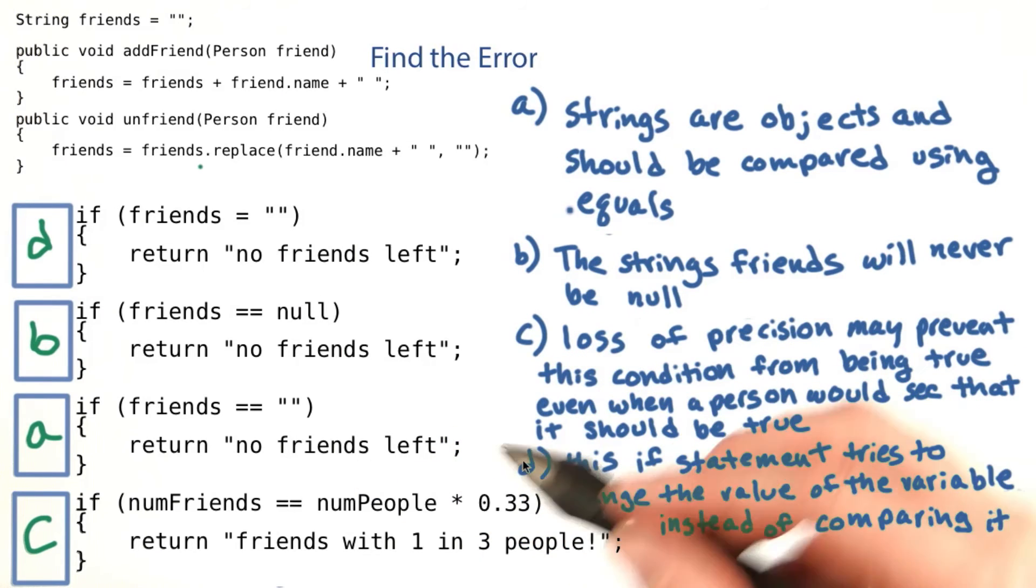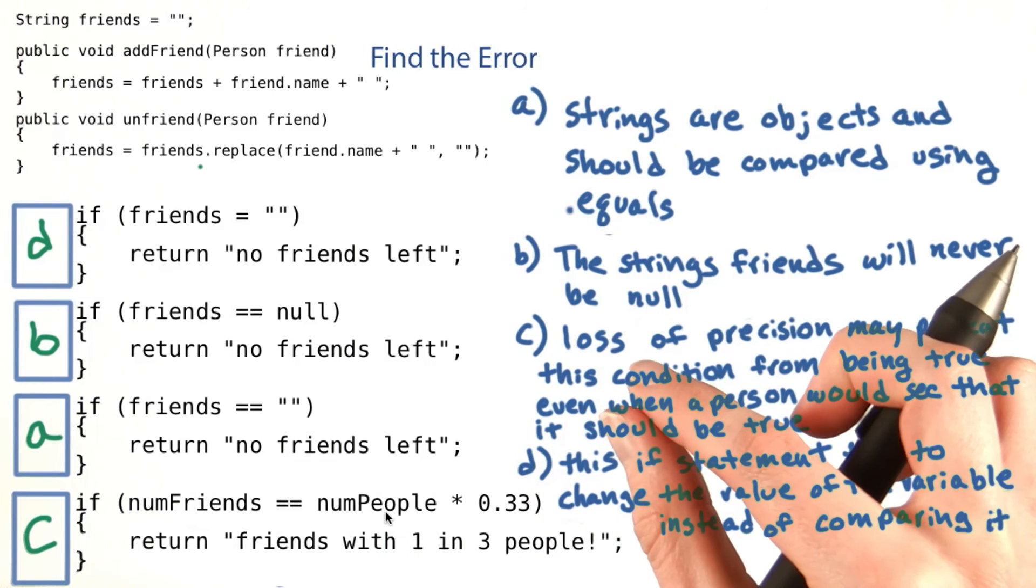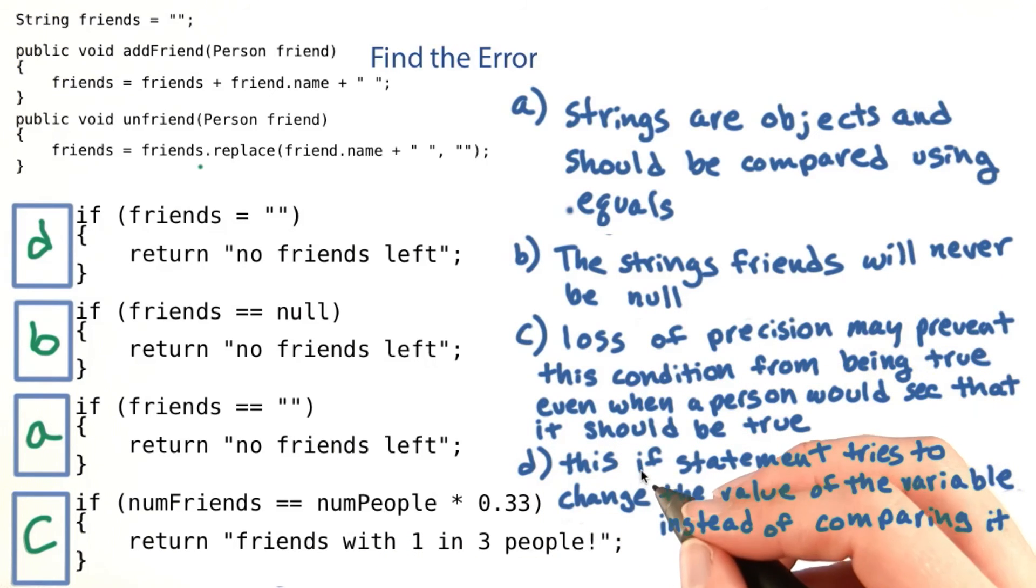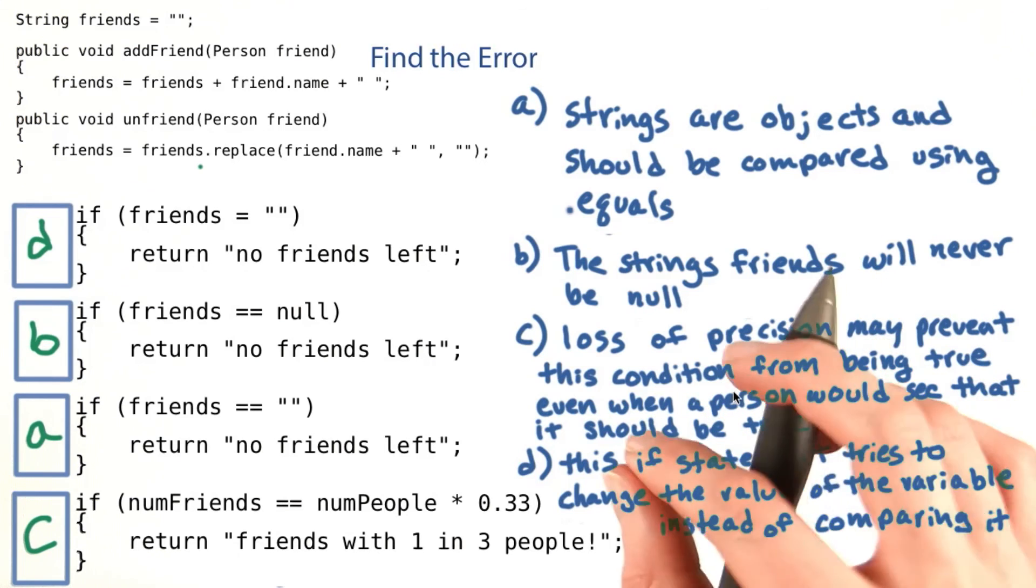When comparing doubles, you always want to find the difference between them and then compare it to a threshold. Pick an epsilon that is the biggest difference you want to accept, and compare the actual difference with your epsilon.